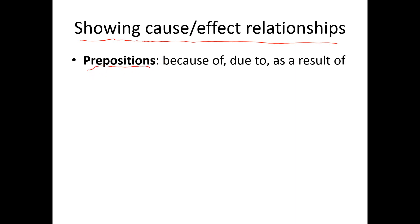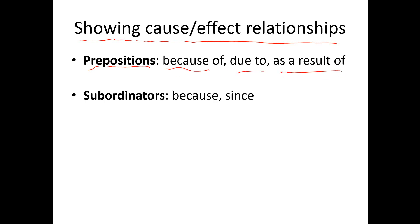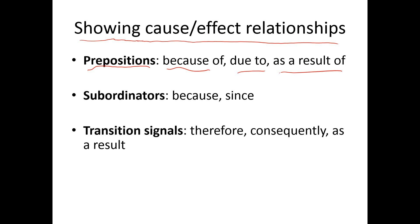So let's do some exercises to see how well we can understand which words to use in which situations showing cause and effect relationships. Remember, we talked about prepositions — followed by a noun or an object: 'because of,' 'due to,' 'as a result of.' We have subordinators, which are followed by a subject and verb. Transition signals show the relationship between two sentences. And coordinating conjunctions are where I have two sentences and make them into one with a comma and 'so.'